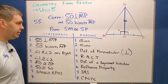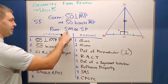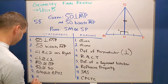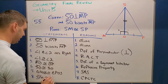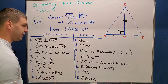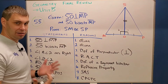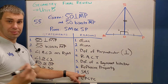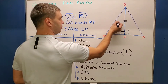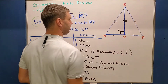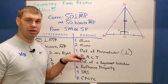Lastly, remember my CPCTC — I'm trying to prove this. I can say side SM is congruent to side SP. In the triangle right now we don't have any markings for SM and SP, but we now know that since those two triangles are congruent by side-angle-side, all their parts are congruent to each other. You can even draw that in and say those two sides are congruent. The reason for that is corresponding parts of congruent triangles are congruent.